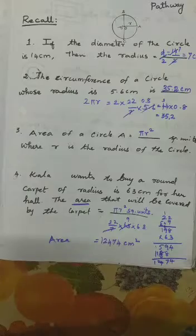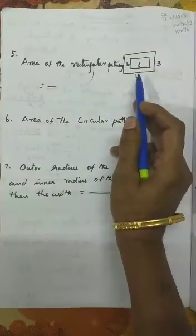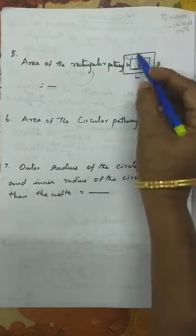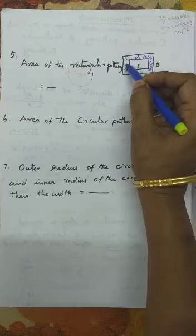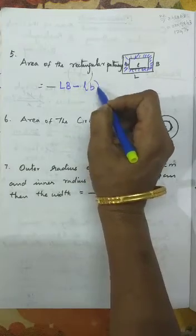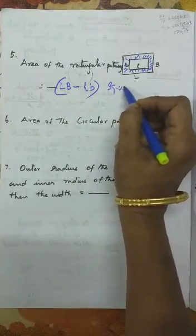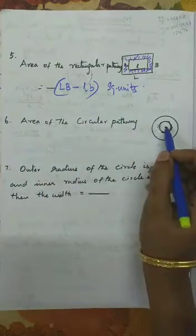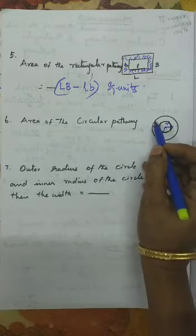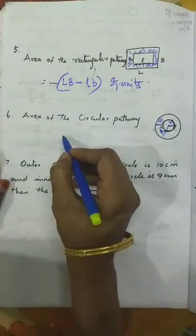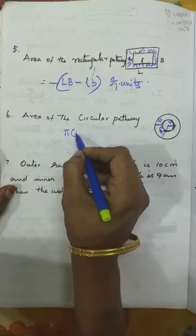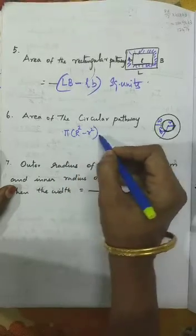For the area of a rectangular pathway, there are two rectangles — the formula is capital L times capital B minus small l times small b, in square units. For a circular pathway, the small r is the inner radius and capital R is the outer radius. The formula is π(R² - r²) square units.